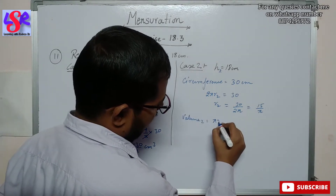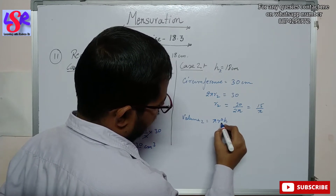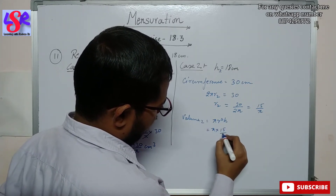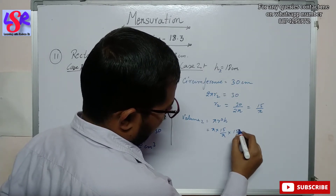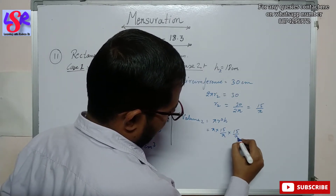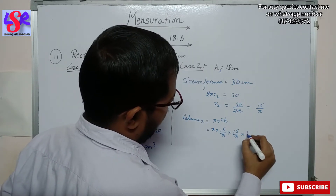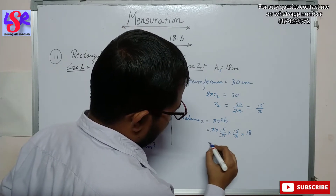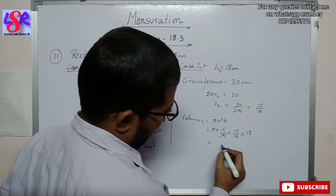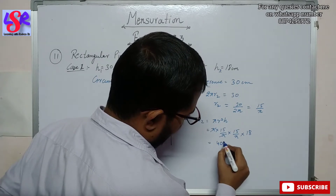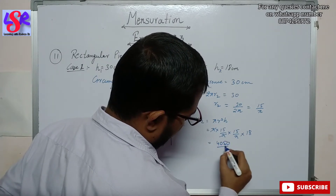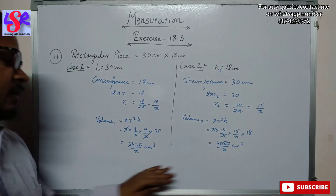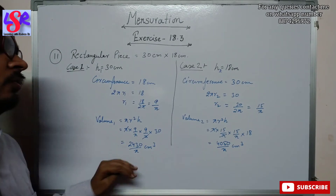Volume 2 = πr²h = π × (15/π) × (15/π) × 18. Again π cancels, giving us 15 × 15 × 18 = 4050/π cm³. Now we have to find the ratio of these two volumes.